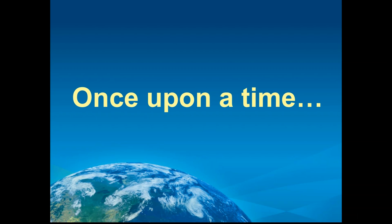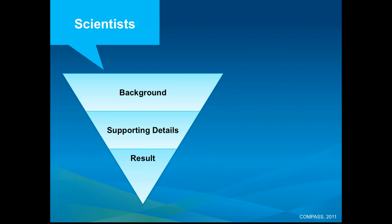Let me illustrate the power of an effective message through a story. As scientists and managers, this is the way we communicate: we give a lot of background up front, talk about prior studies, go into supporting details with a lot of description of methodology, error, and uncertainty, and then finally key in to a result and its implications. This is how we communicate through scientific journal articles, talks, and technical reports.